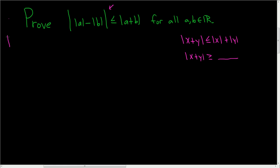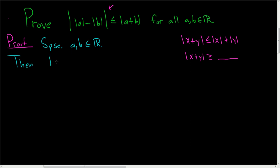Let's go ahead and prove this. Suppose a and b are real numbers. In order to do this proof, we will start by looking at the absolute value of a and use the triangle inequality to somehow involve b. Then we'll do the same thing with the absolute value of b, and hopefully it should follow from there.